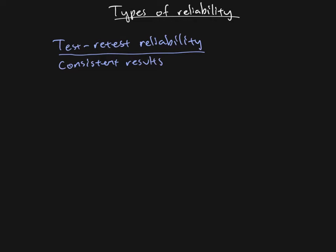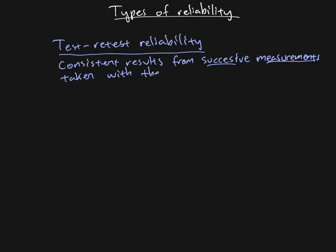What we mean by test-retest reliability is that the measure gives us consistent results from successive measurements — successive meaning one after the next, successive in time. So we're getting consistent results from successive measurements taken with the exact same measure.